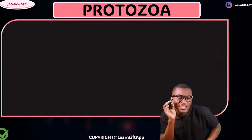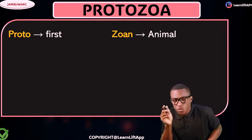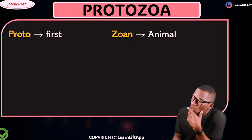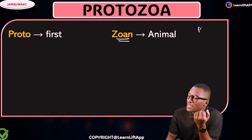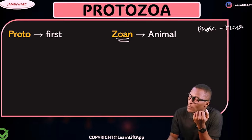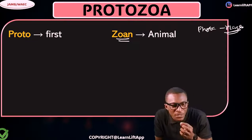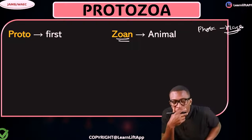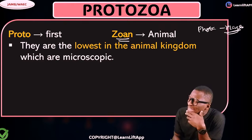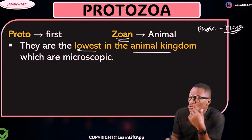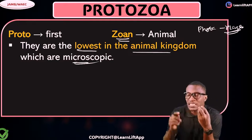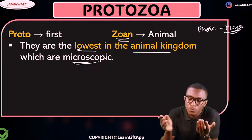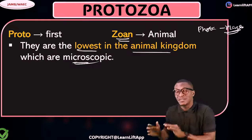Let's take note: the word 'pro' means first and the word 'zoa' means animal — just the way we have 'phyto' for plant. So the word 'pro' means first, the word 'zoa' means animal. These guys are the lowest in the animal kingdom, and they are microscopic.